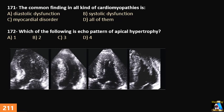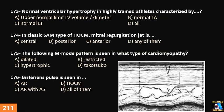Question 172: Which of the following is the echo pattern of apical hypertrophy? Question 173: Normal ventricular hypertrophy in a highly trained athlete is characterized by which of the following: upper normal limit LV volume and diameter, normal ejection fraction, normal LA, or all of them?